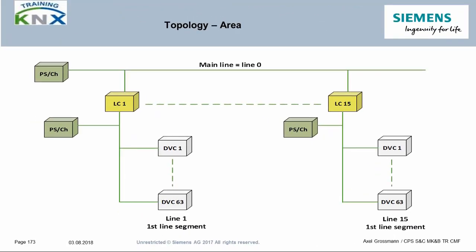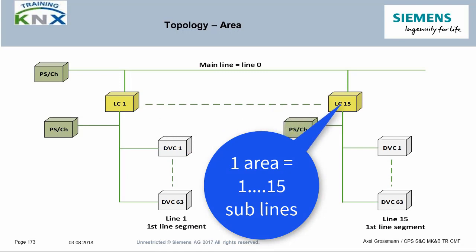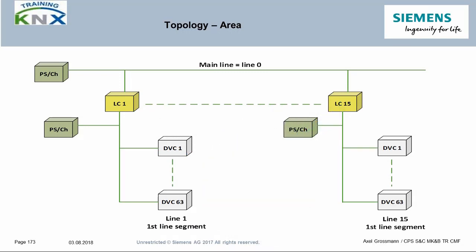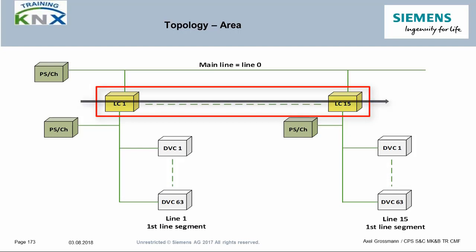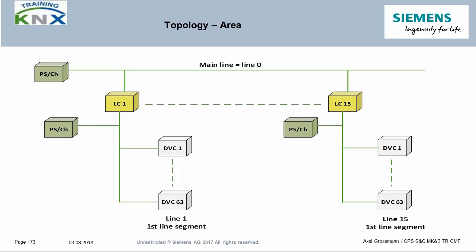Each area in the KNX system can contain a maximum of 15 sublines. These sublines are networked with each other via the main line. The line coupler serves as the coupling element. It connects the first line segment with the main line communicatively, but also represents a galvanic separation between the two lines. If it is not sufficient to equip the sublines with the first segment — for example because more than 64 subscribers are required — further three more segments can be set up and connected in parallel.